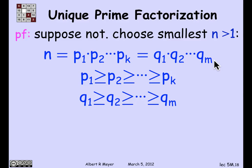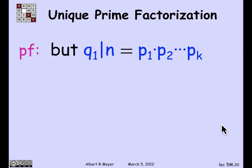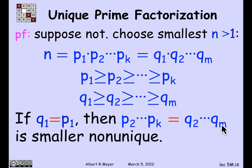We can assume the p's are listed in weakly decreasing order, and the q's likewise. Now, suppose that q1 equals p1. That's not really possible, because if q1 equals p1, I could cancel p1 from both sides and get that p2 through pk equals q2 through qm. These would still be different factorizations, but now I've produced a smaller number without unique factorization, contradicting the minimality of n. So it's not possible for q1 to equal p1.